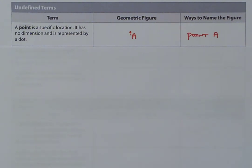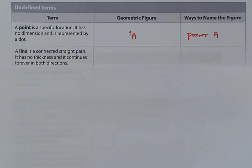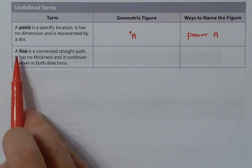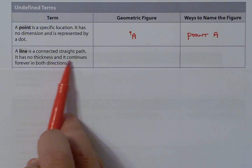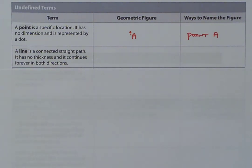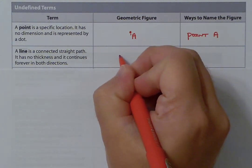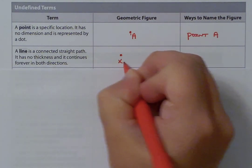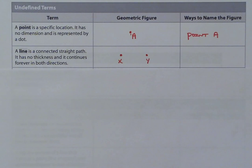That is our first undefined term, which is a point. Let's talk about our next undefined term, which is a line. A line is a connected straight path — it has no thickness, and it continues forever in both directions. If we were to look at what a line looks like, it's going to include two points. Basic geometry understanding is that every line needs to consist of at least two points, though it can contain more than two.